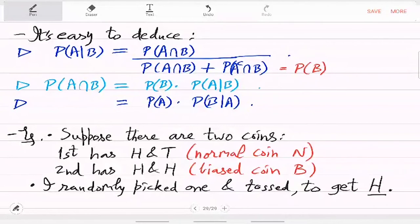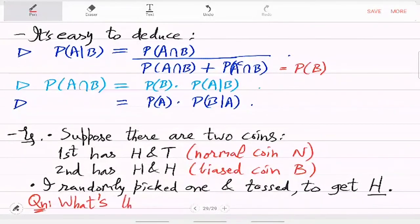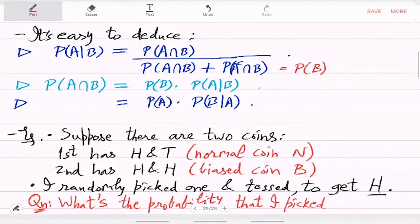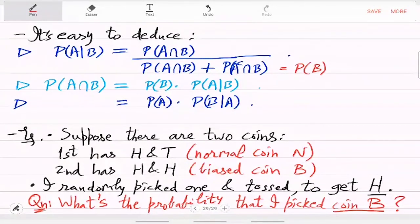This is what I got at the end of the experiment. It is a random experiment, so you can talk about probability — but probability of what? I have already got a head, so there is no question about that. The question is: which coin did I pick? Did I pick the normal coin or the biased coin? So what is the probability that B was picked, given that head appeared?